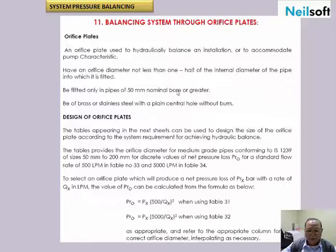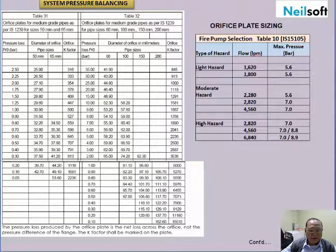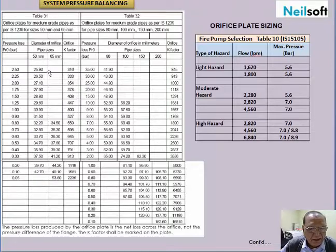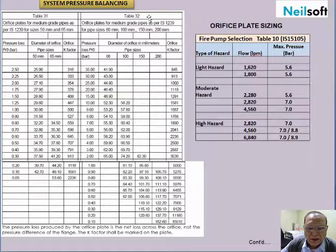This covers the minimum size and the applications required for flow control and pressure control, as well as the minimum pipe size where the orifice plate can be applied. This slide gives the calculated pressure losses according to pipe diameter. Table 32 explains the orifice plate size for 50 mm and 65 mm diameters with the given K factor, and the table covers pipe sizes up to 200 mm.